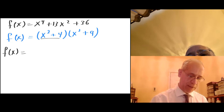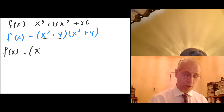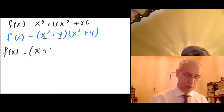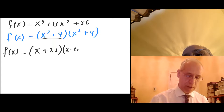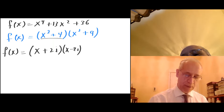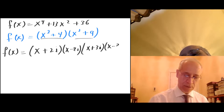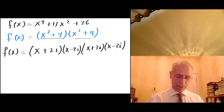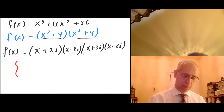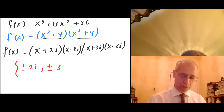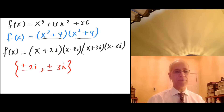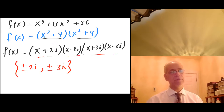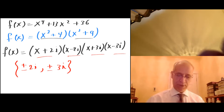Factoring x squared plus 4 gives me sum of two squares: x plus 2i, x minus 2i. And factoring x squared plus 9 gives me x plus 3i, x minus 3i. So the zeros are plus and minus 2i and plus and minus 3i — set each factor equal to zero to find these.